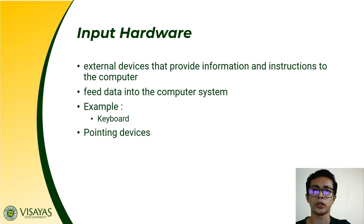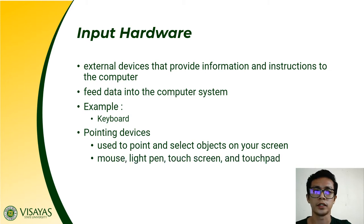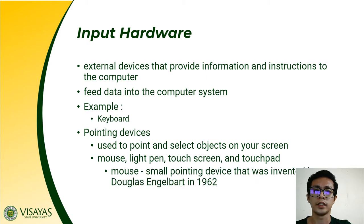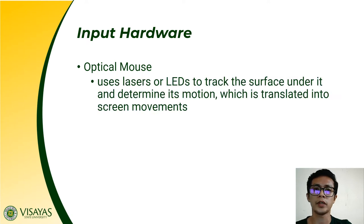Another example of input devices are what we call pointing devices. These are used to point and select objects from your screen. It could be a light pen, mouse, touch screen, and a touchpad. The mouse was first invented by Douglas Engelbart in the year 1962. An example of a mouse is the optical mouse, which is now commonly used today. The optical mouse uses light technology — the word 'optics' means light.